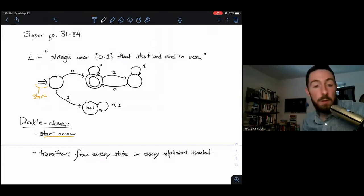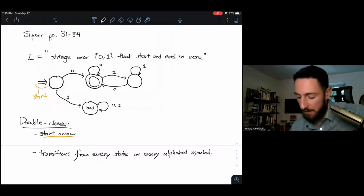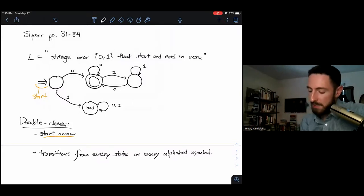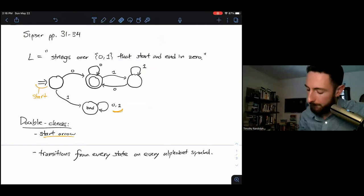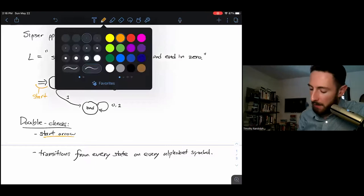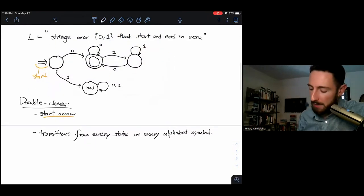It's also got to have transitions from every state on every alphabet symbol. This requirement is in place so that we always know what to do. If I look over each of my four states, they all have exactly one arrow going out on zero and exactly one arrow going out on one. This 0,1 notation is just a simplification of having two different arrows.